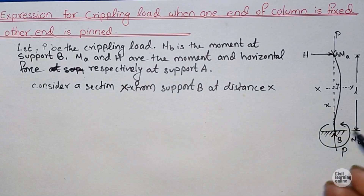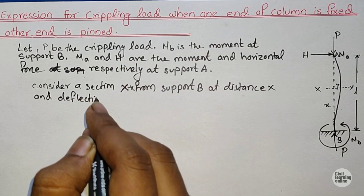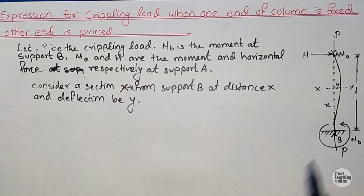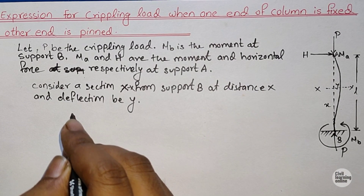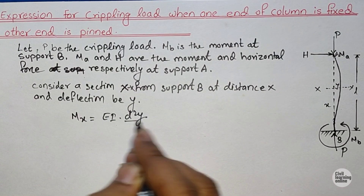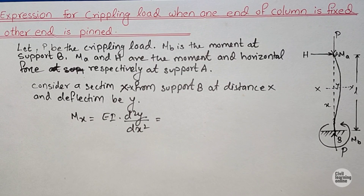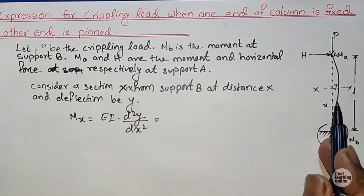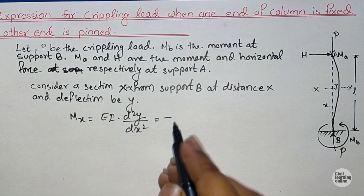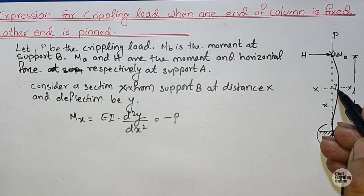Considering section X from support B at distance X with deflection Y, we write the moment at distance X: EI times d²y/dx² equals the moment contributions. Watch this step carefully because here the derivation begins. The deflection is concave, so the value will be negative, giving us P multiplied by the perpendicular distance Y, so we have P times Y.